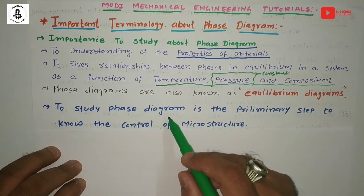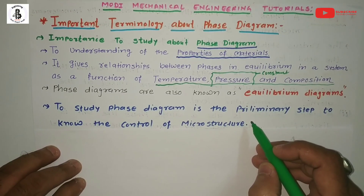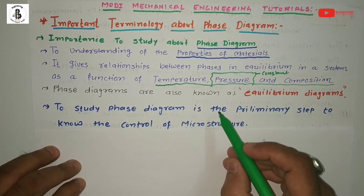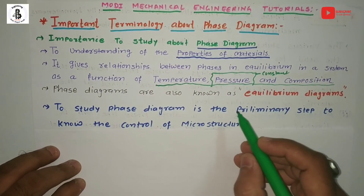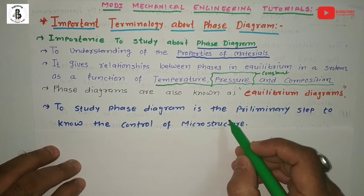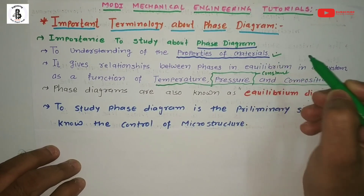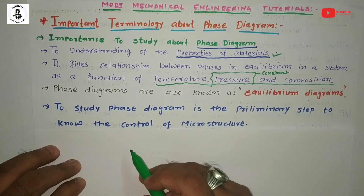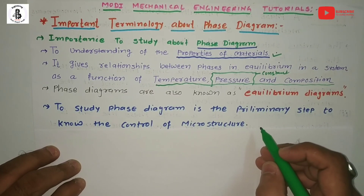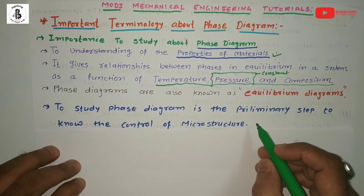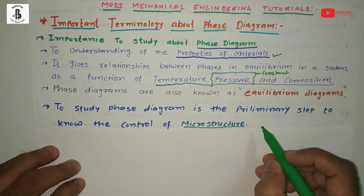Studying the phase diagram is a preliminary step to understanding the control of microstructure. Different phases exist at different set of conditions of temperature and composition, and each phase has a different structure and different mechanical properties. By the help of the phase diagram, we can study the various phases that exist at different set of conditions — those conditions correspond to different microstructures formed.